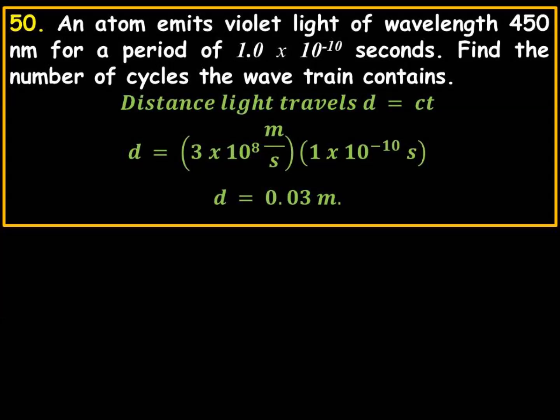Remember that v, velocity, equals distance over time. C is just a particular type of velocity. It's the velocity of light. So solving for d, you have d equals ct from v equals d over t.